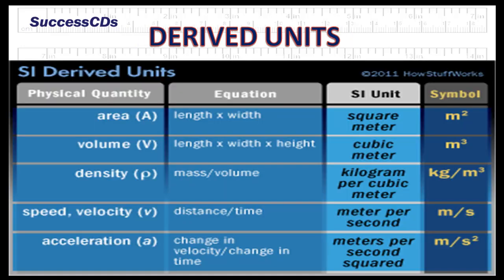Derived units are units which are derived from these fundamental units. Some examples are given here, like area, volume, density, speed, velocity, acceleration, etc.